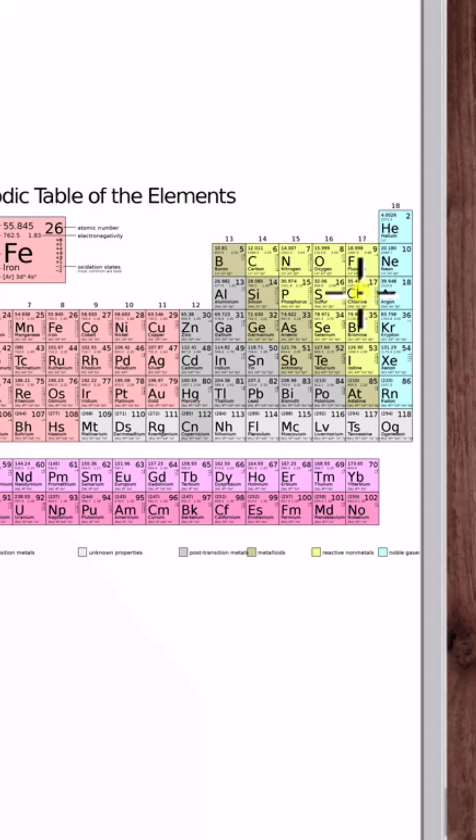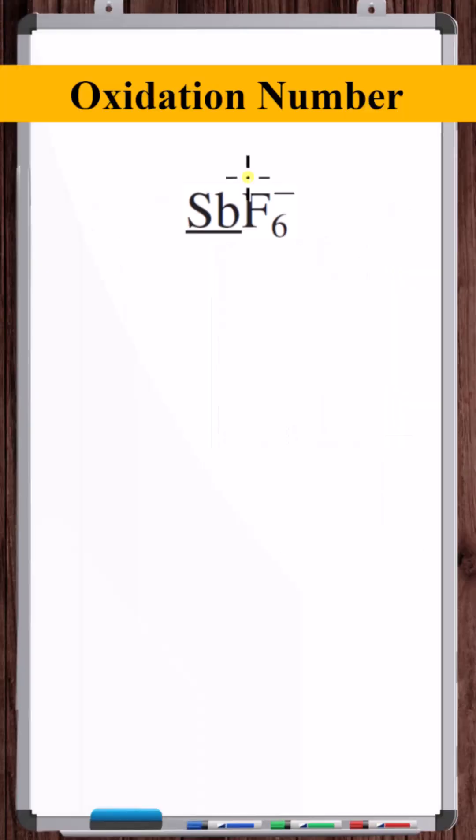However, fluorine is a special case for a halogen. A hard rule is that fluorine has an oxidation number of -1 in all compounds. So the oxidation number of the fluorine is -1.